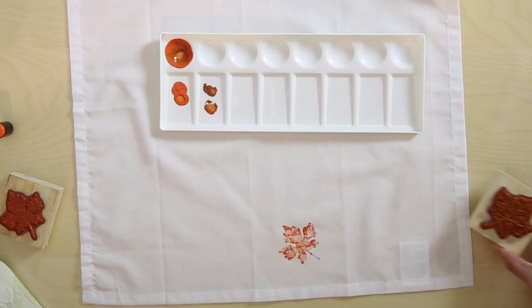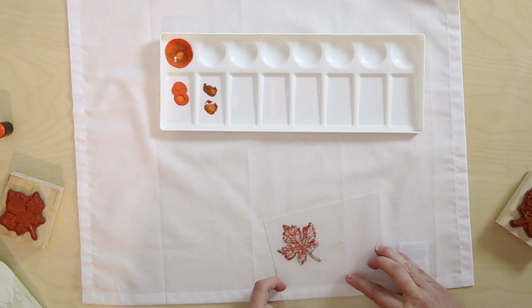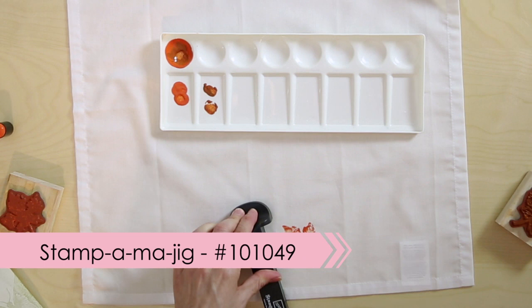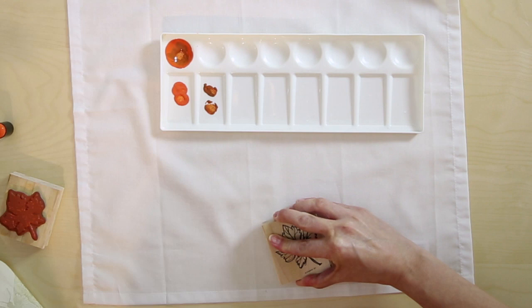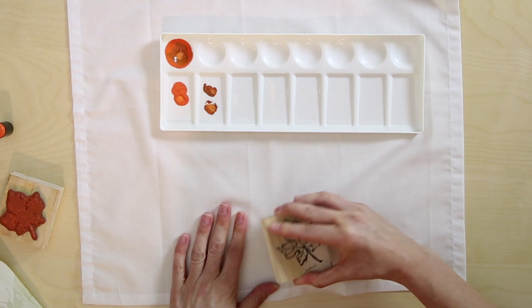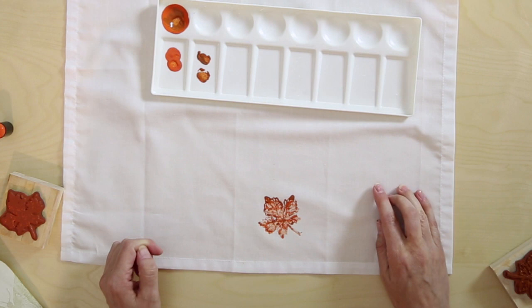I've got my Stampin' Majig ready here, and I've just stamped with regular ink so that's upside down on my Stampin' Majig. Let's get that all lined up and then just apply that directly to the fabric. Again, you're going to want to hold that there for a minute just to let that paint absorb into the fabric.